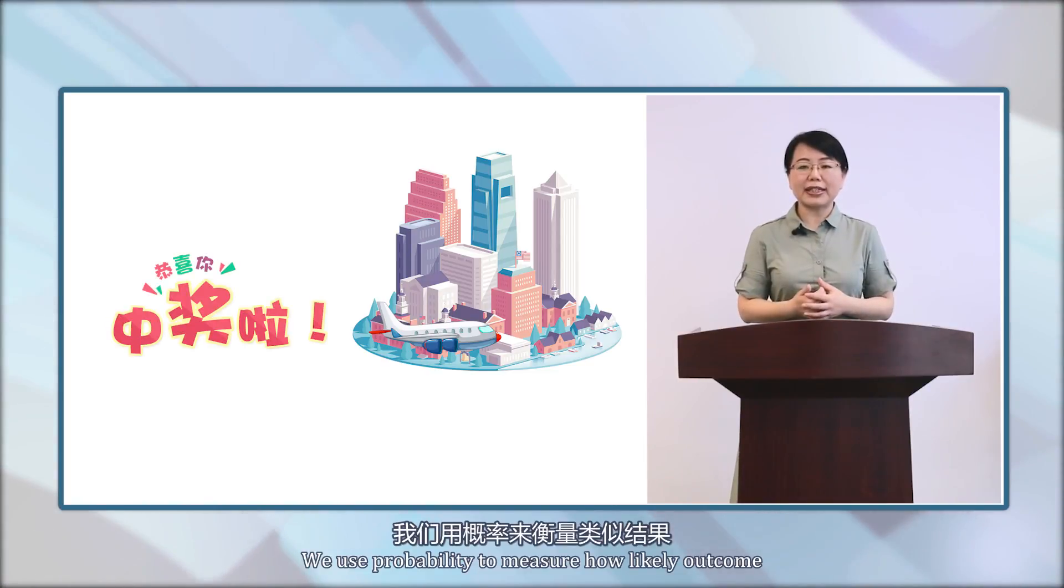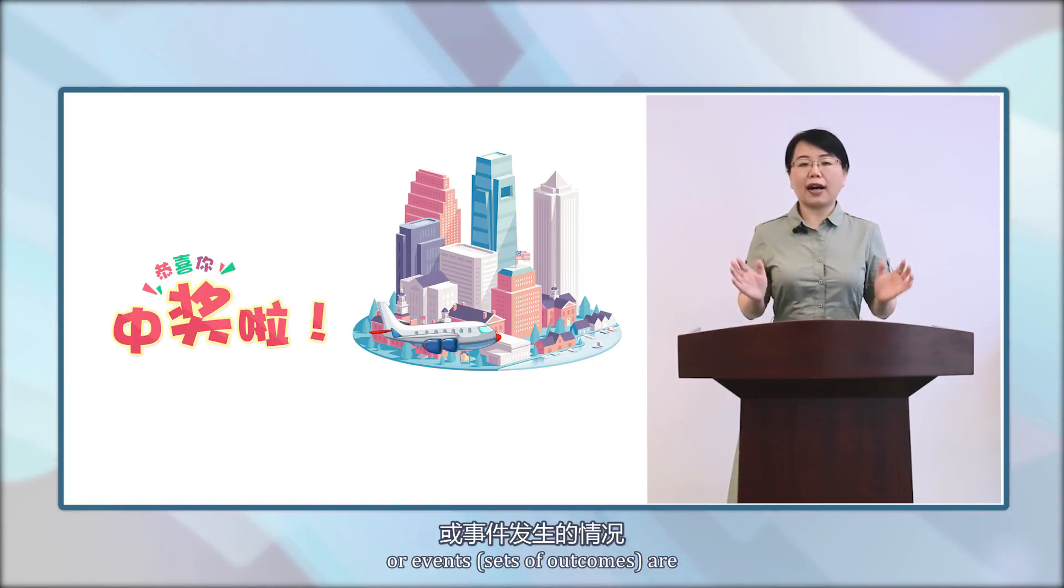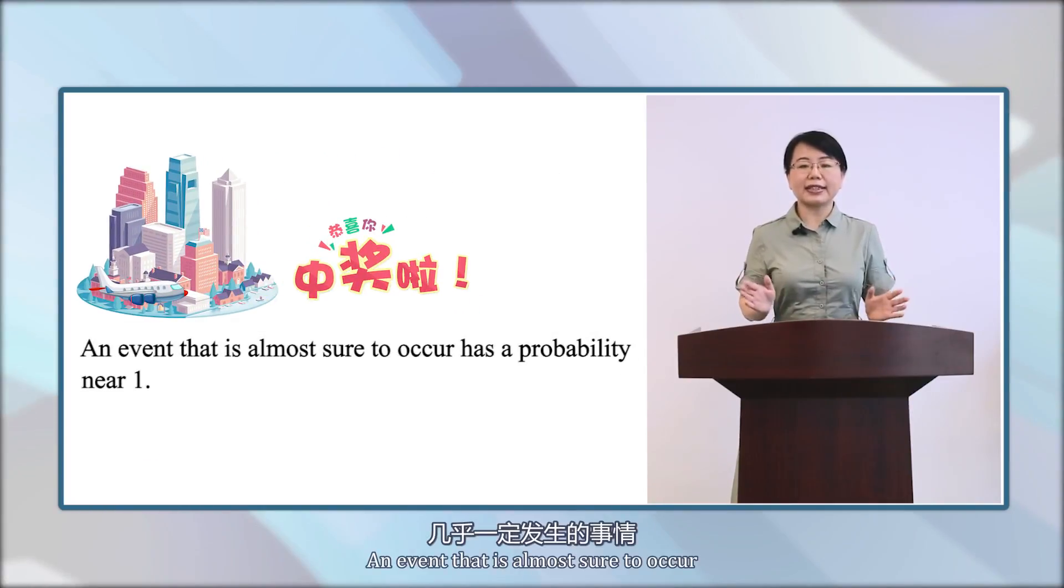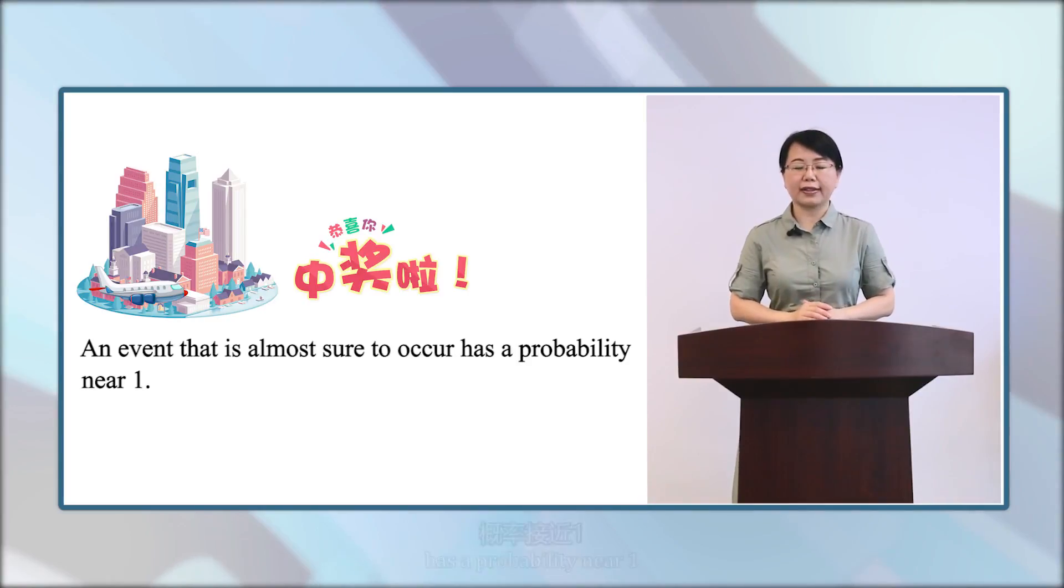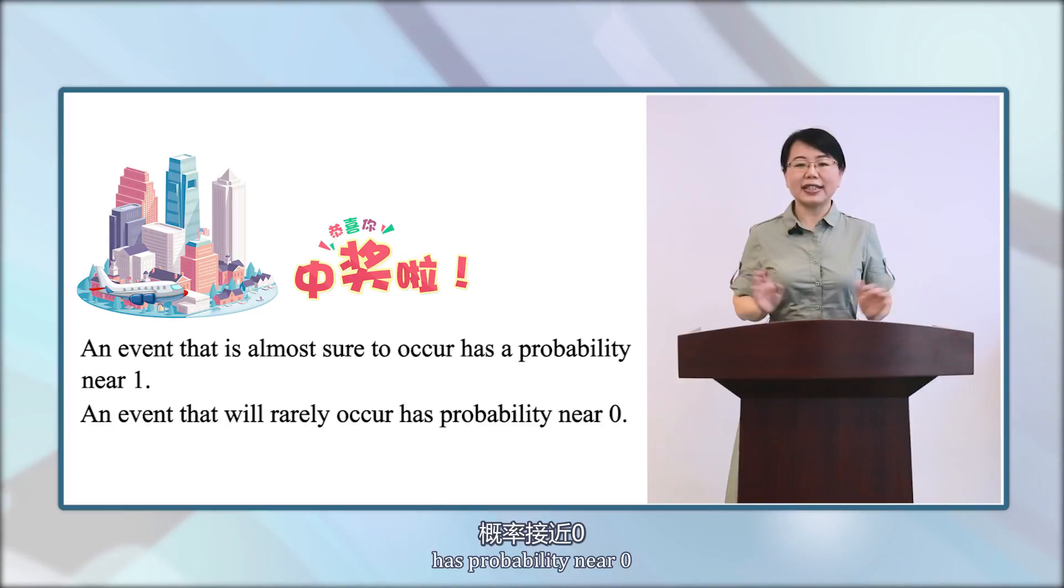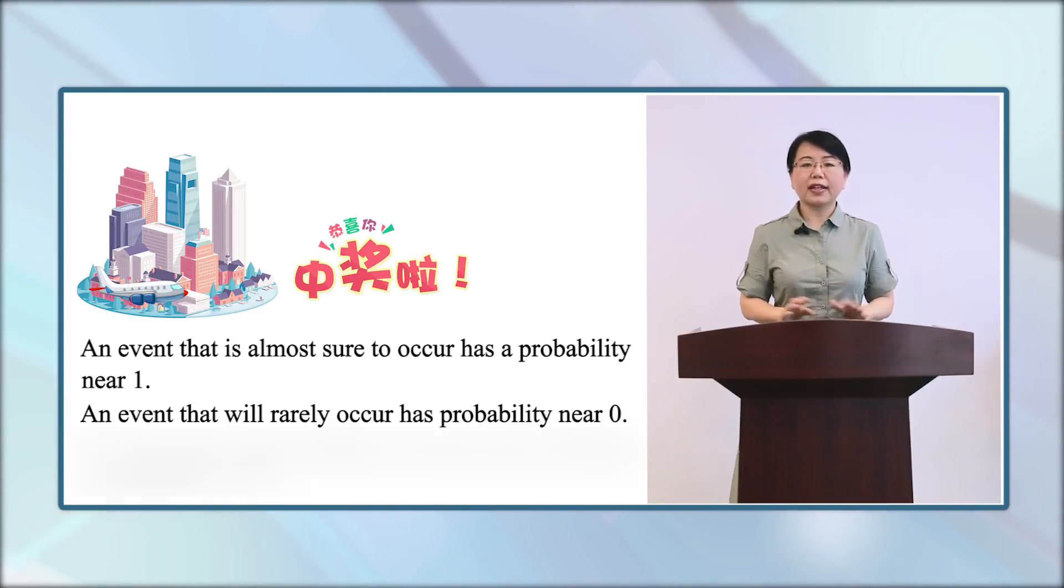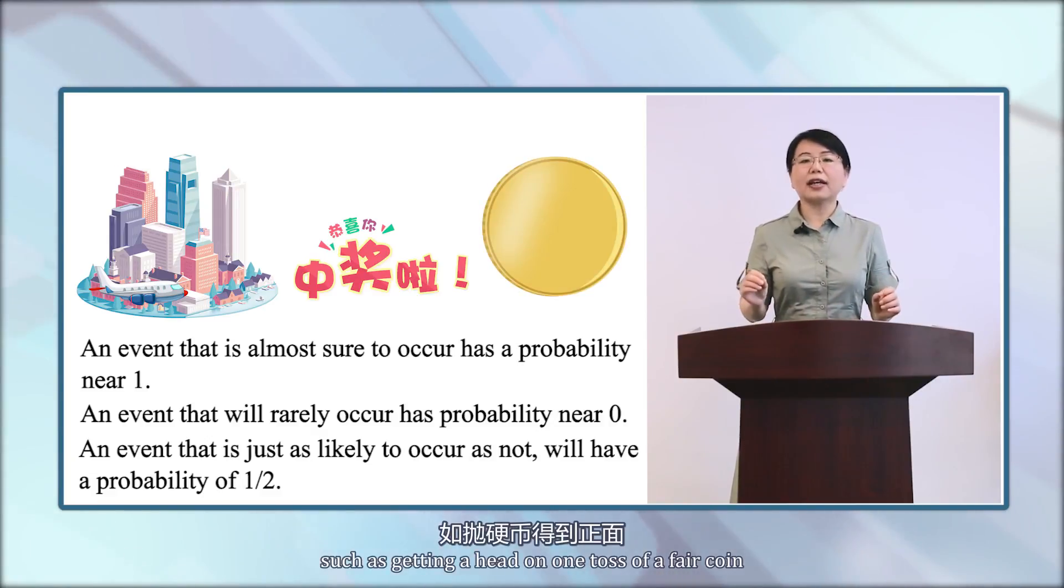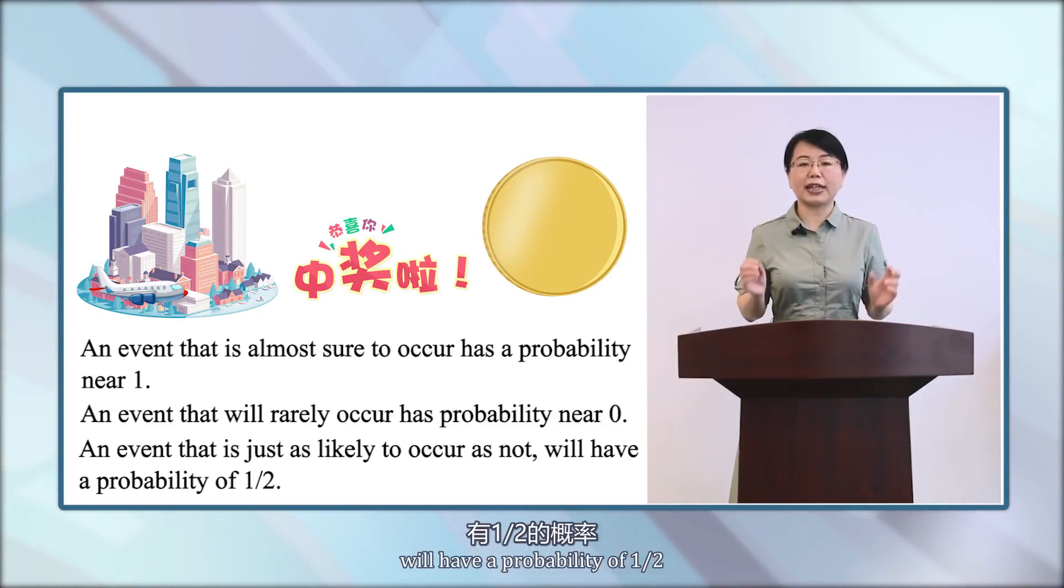We use probability to measure how likely outcomes or events are. An event that is almost sure to occur has probability near 1. An event that will rarely occur has probability near 0. An event that is just as likely to occur as not, such as getting a heads on one toss of a fair coin, will have a probability of one half.